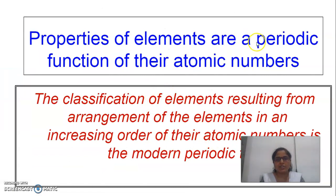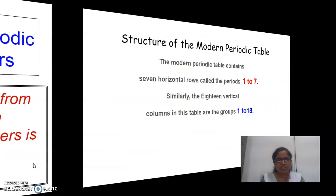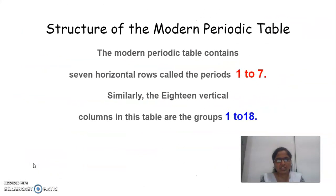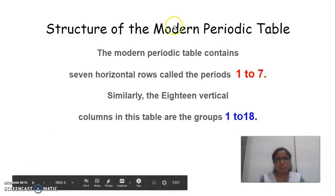The properties of elements are a periodic function of their atomic number. As we see, the atomic number increases, and that is why according to this periodic table, the elements are arranged. This is the structure of the Modern Periodic Table.